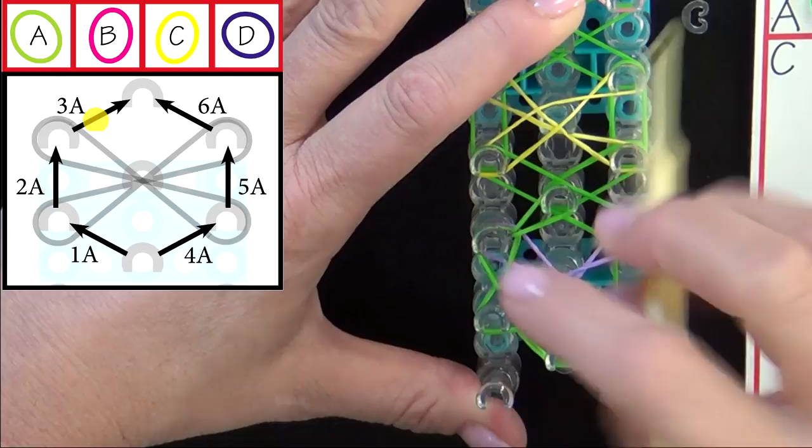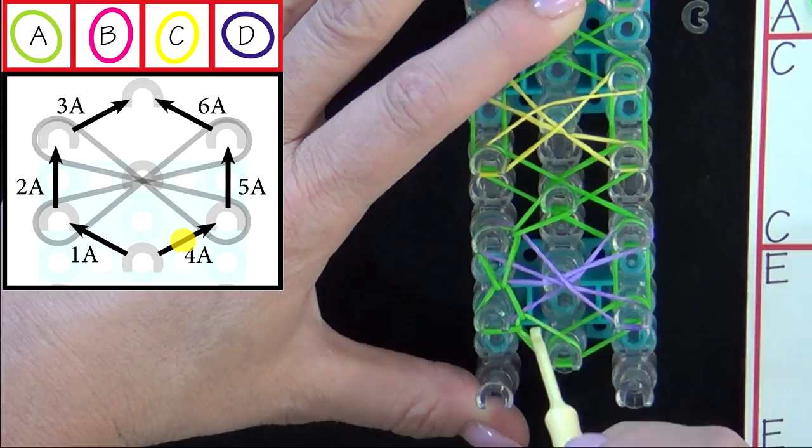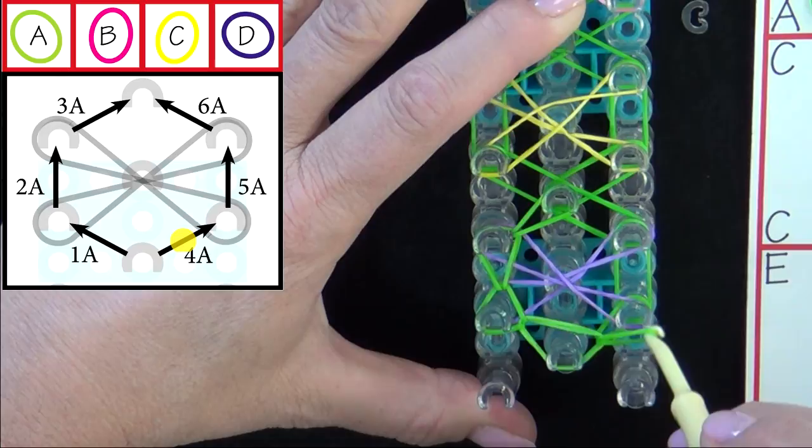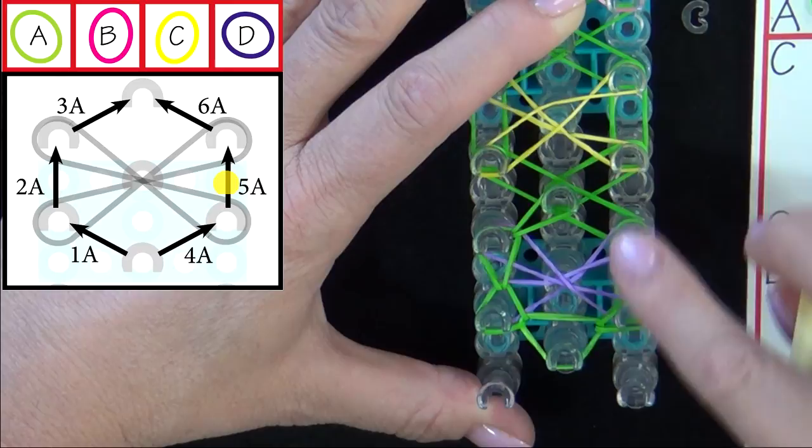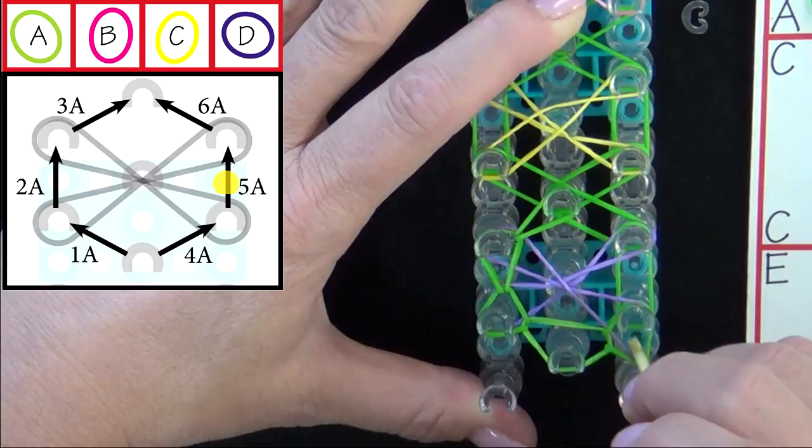Then we'll return to the beginning of the hexagon, to this first pin. Pull the cap band back, grab that band, that's band 4A, and loop it out to the side. 5A will be looping forward. Again you pull all bands back from that bottom A band, and then you pull that band forward.